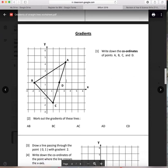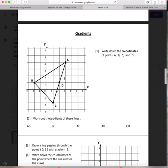So writing down the coordinates of the points A, B, C, D. Well, we start with the X is three and the Y is four. So A is three, four. D is two, one. I'll let you do the other two.